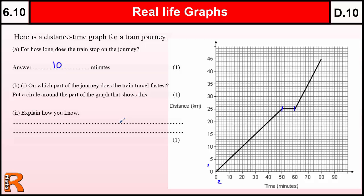Which part of the journey does the train travel fastest? We've got to put a circle around the part of the graph that shows this. So when we're looking at a distance time graph, if we have a line that's coming across relatively flat, that means that as time goes on we're not going very far very quickly, so this is quite a slow motion.